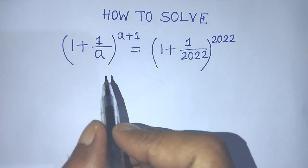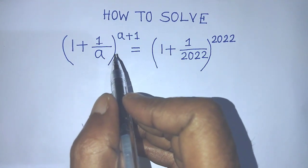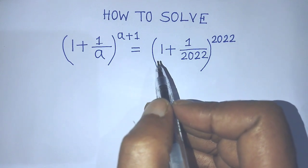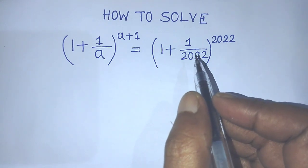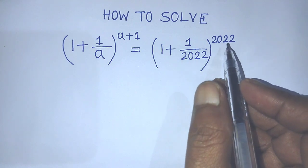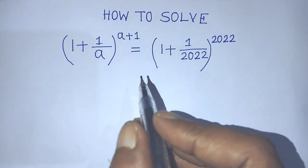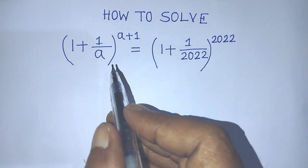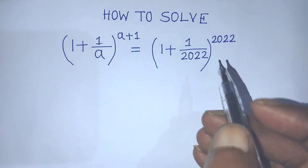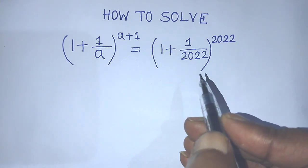Our given algebraic equation is (1 + 1/a)^(a+1) = (1 + 1/2022)^2022. To find the value of a from this equation, first of all we have to simplify the left hand side.